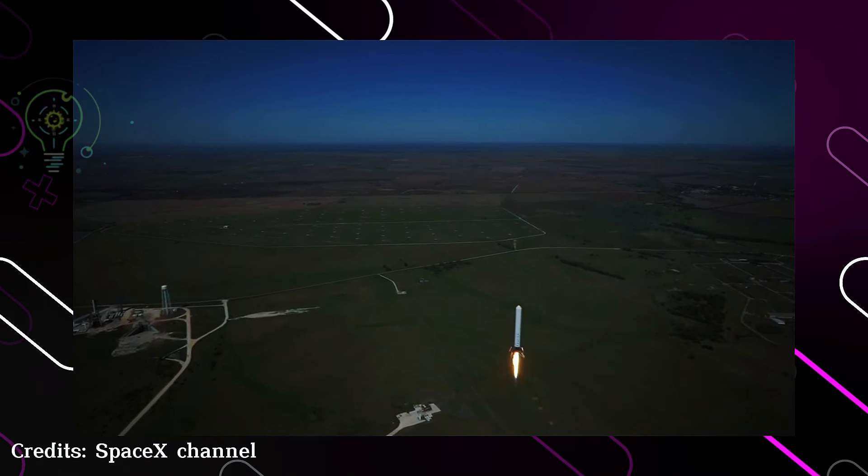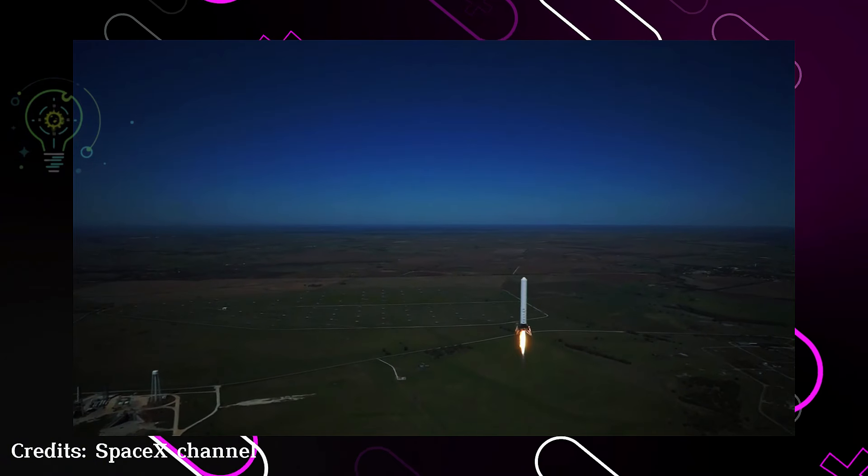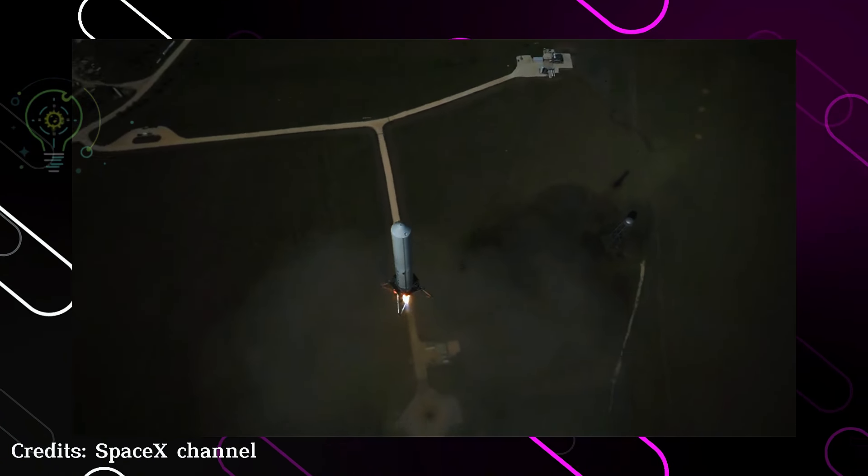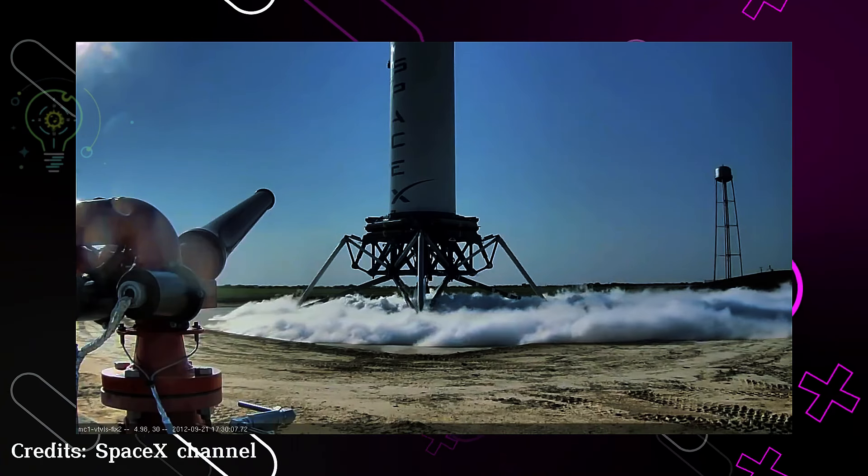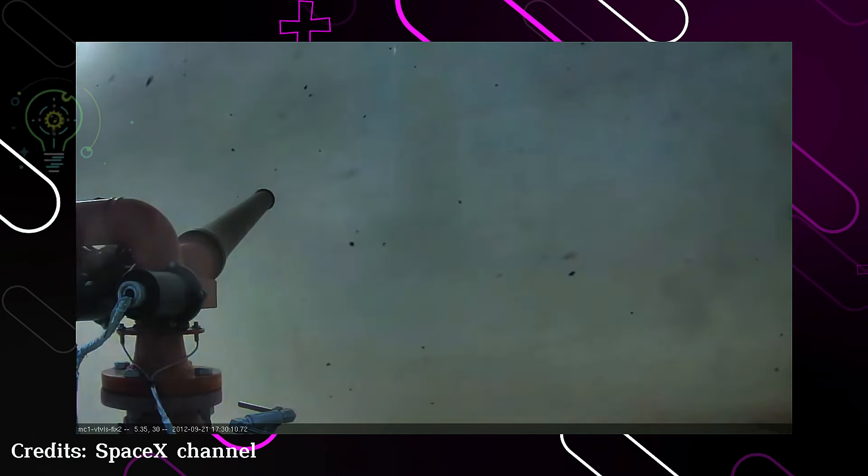Number eight: Grasshopper. Grasshopper was an experimental vehicle developed solely to test vertical landing technology. This hopper was crucial for SpaceX to master safely landing its rockets back on Earth, a must for reusing the Falcons.